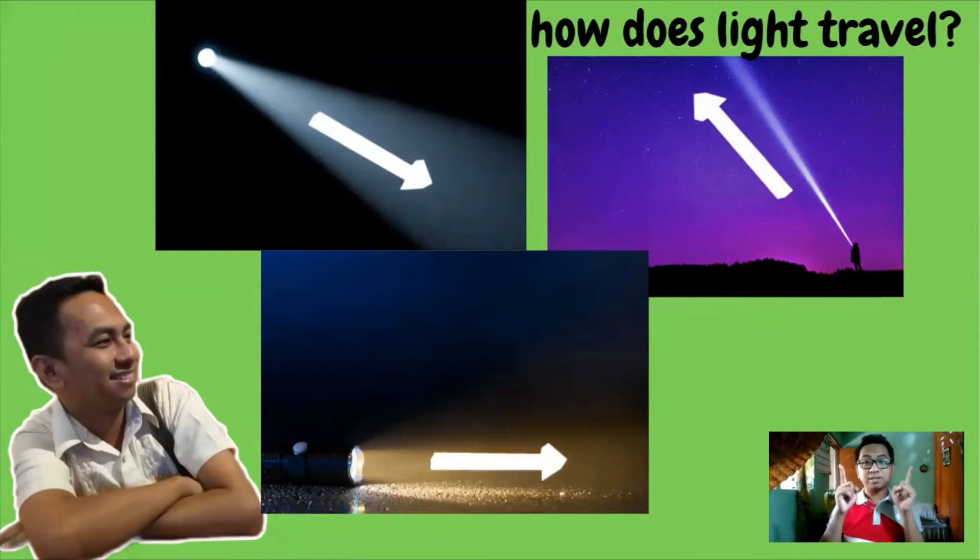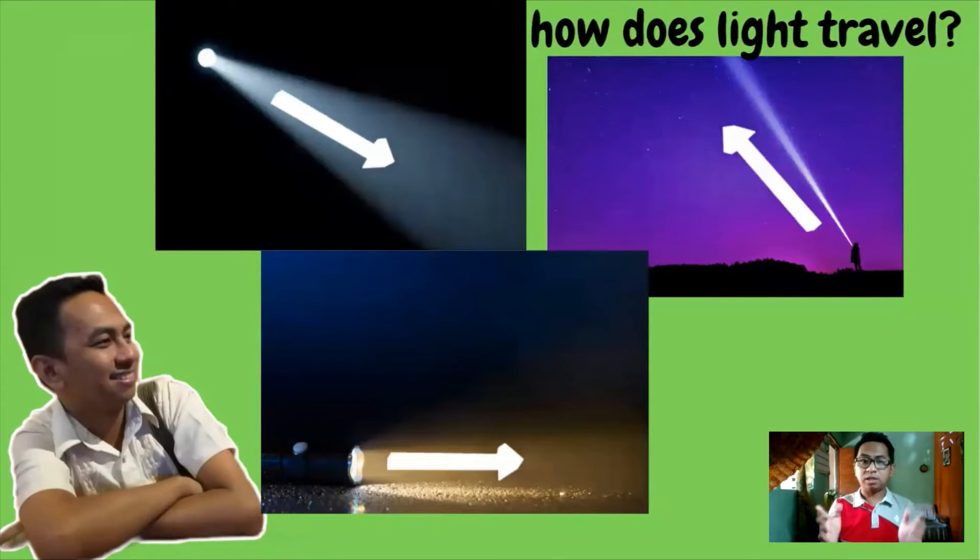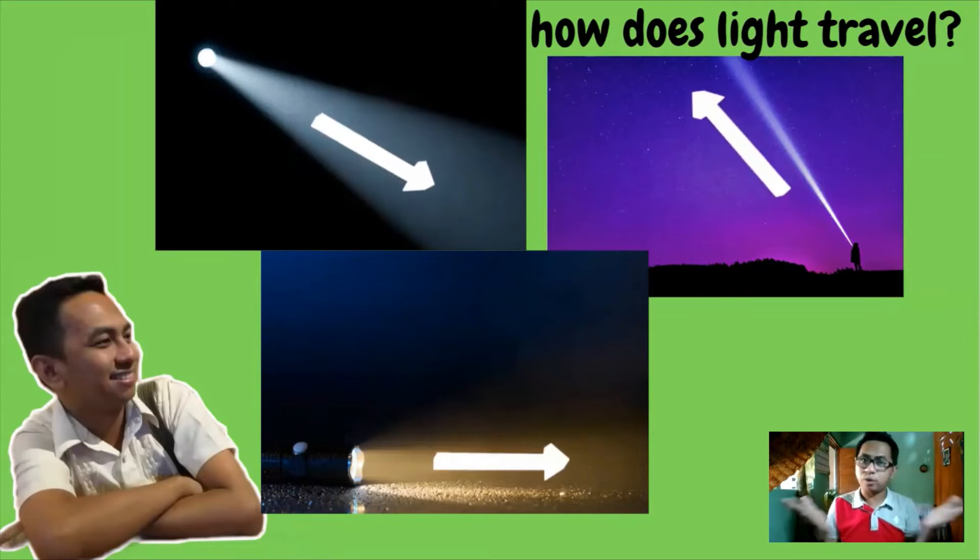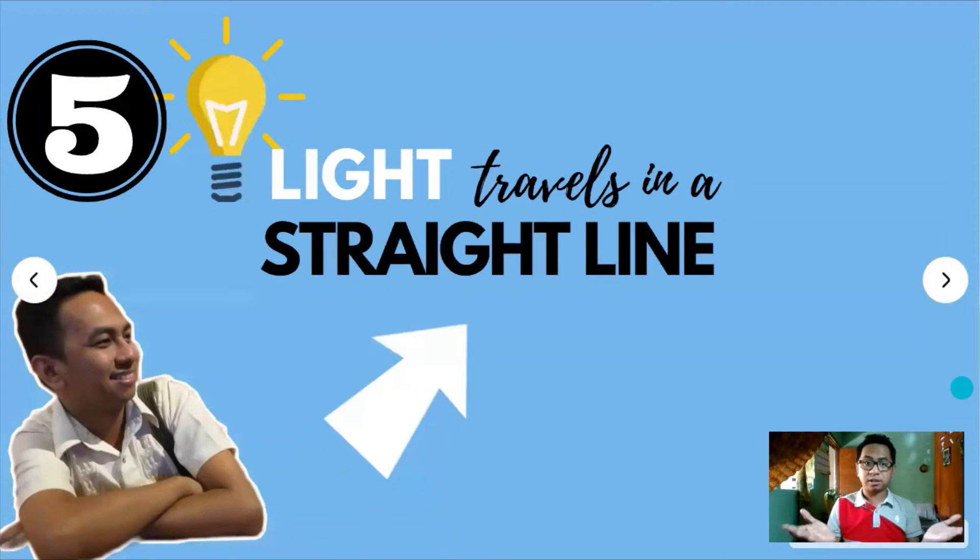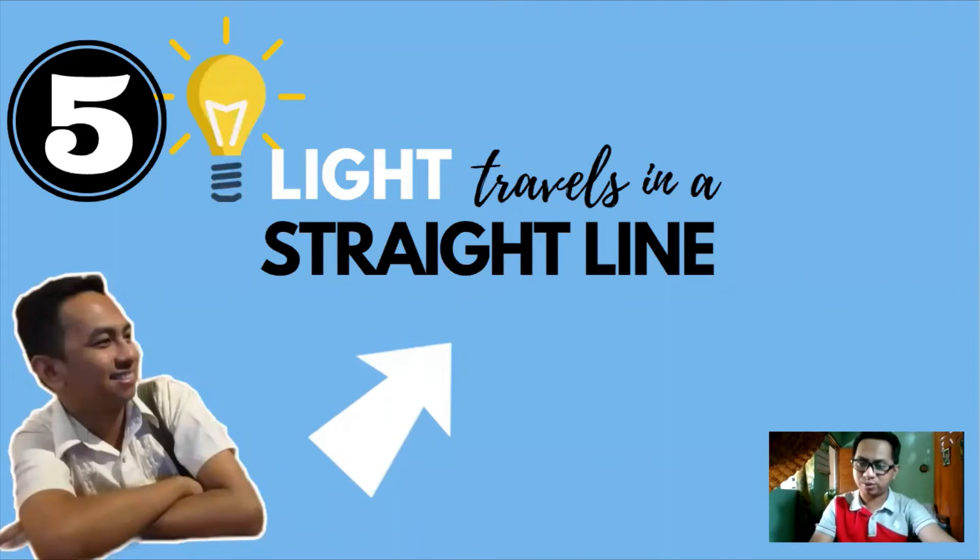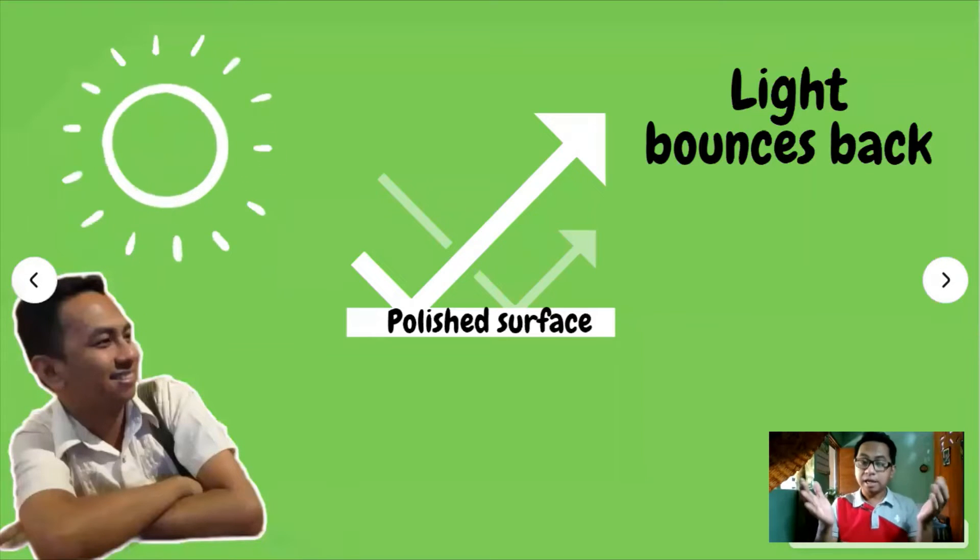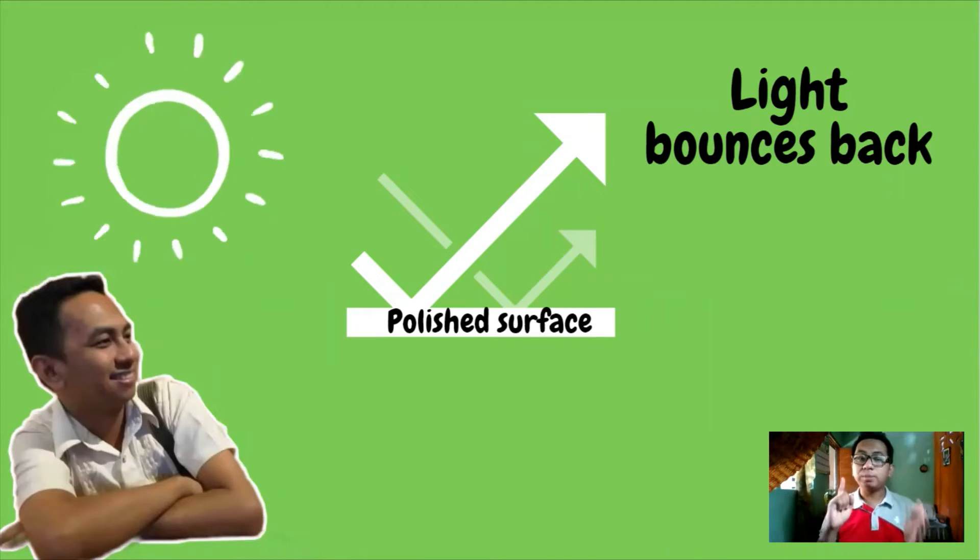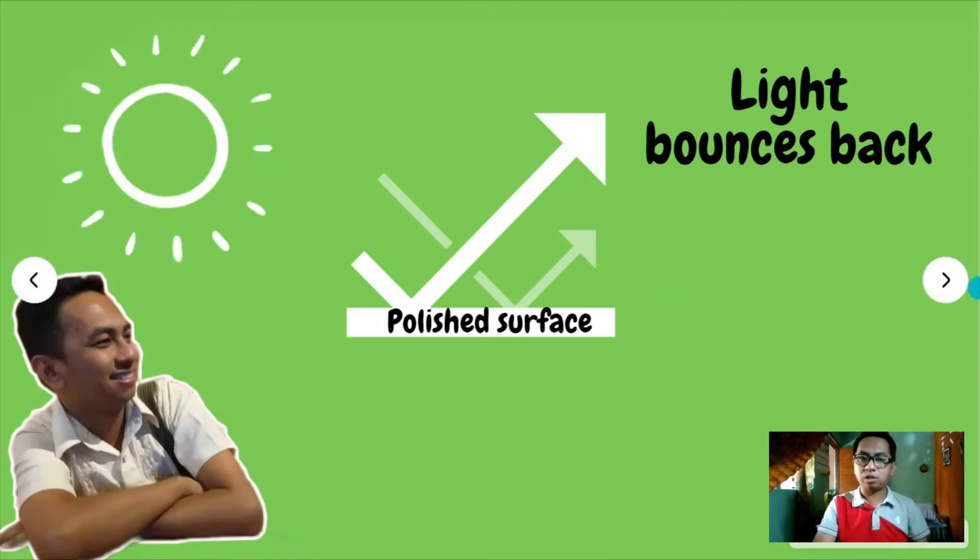Look and observe these pictures. When you light a flashlight, it forms a visible beam in the dark room or area with suspended dust particles. In what pattern does light travel? Is it in a curved line, spiral, or what? What do you think? You got it right. For our fifth characteristic of light, light travels in a straight line in an optically homogeneous medium. Shadows indicate that light moves in a straight line.